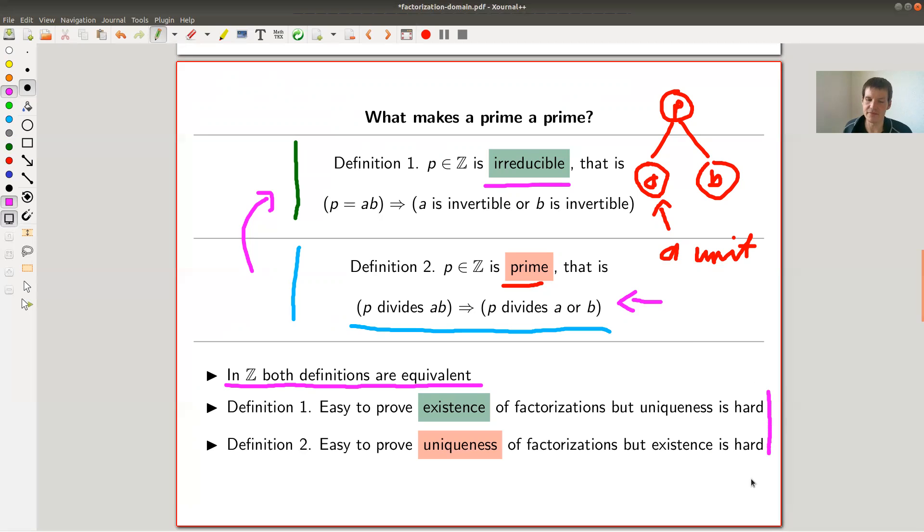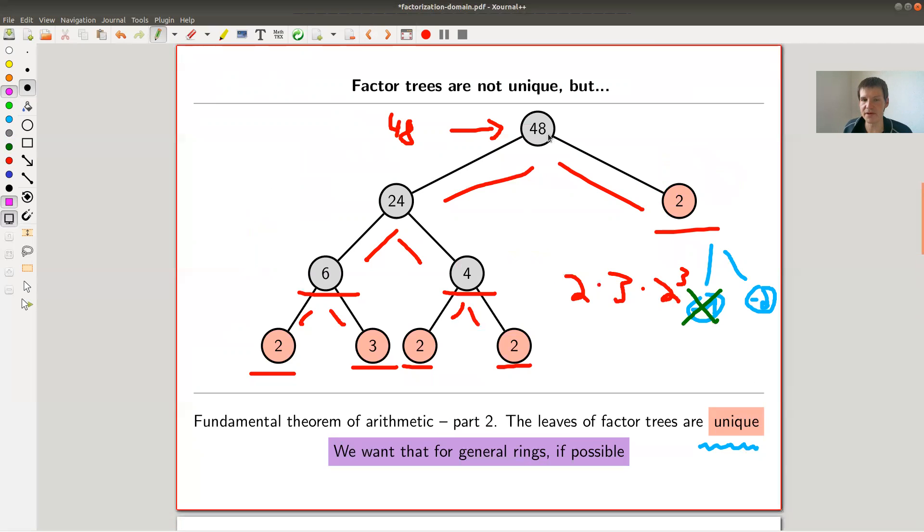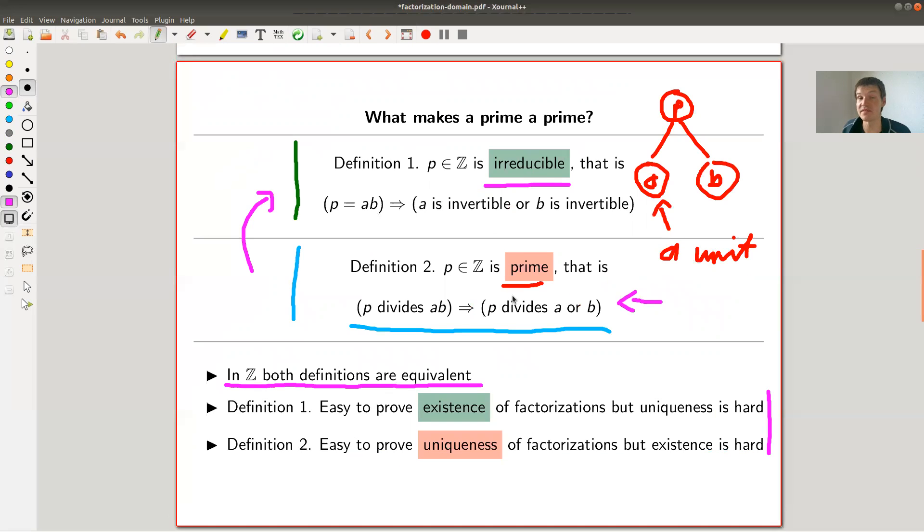Anyway, so what I just said is with the first definition existence is easy to prove. I already explained that like you just keep on going, and you just keep on going until you can't go any further anymore. And uniqueness is easy for the other statement because it basically says no matter how I split my tree into a and b, I can be sure that my favorite prime will turn up at one of those splittings. That's kind of what this property says.